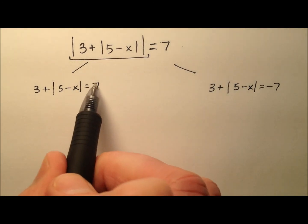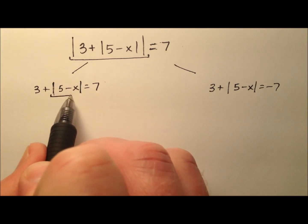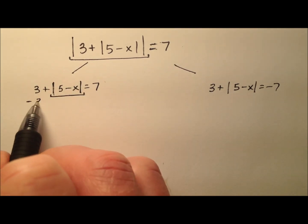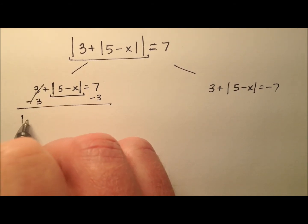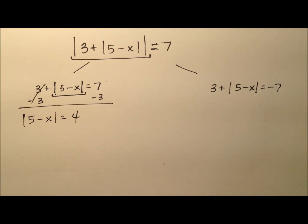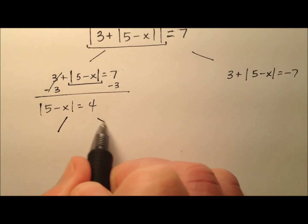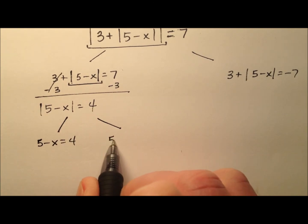Okay, so let's deal with this left one first. I have another absolute value, so I need to start by isolating that. So I'm going to subtract 3 from both sides and I have the absolute value of 5 minus x equals 4. Okay, so I'll have to split this one up. So 5 minus x equals positive 4 and 5 minus x equals negative 4.